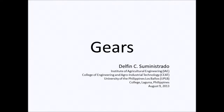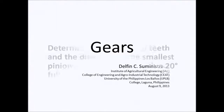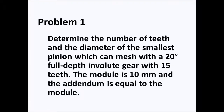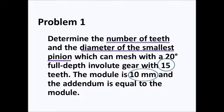In this video I will demonstrate a solution to a problem on gears. We will have to solve for the number of teeth and the diameter of the smallest pinion which can mesh with a gear with 15 teeth. The module is 10 mm and the addendum is equal to the module.